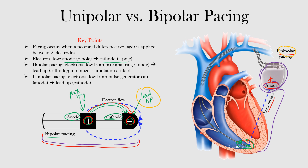Let's review what we discussed. Pacing occurs when there's a potential difference — a voltage — applied between two electrodes. Electron flow is always from the anode, the positive end, to the cathode, the negative pole. With bipolar pacing, electrons go from the proximal ring (anode) to the lead tip (cathode), and this is the configuration that minimizes the stimulation artifact on the EKG.